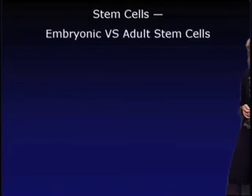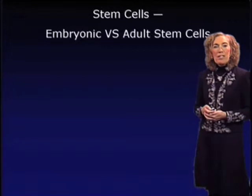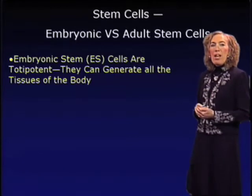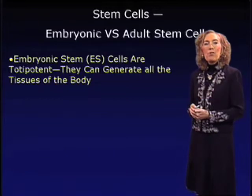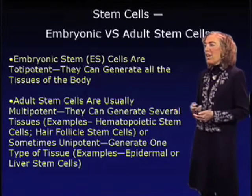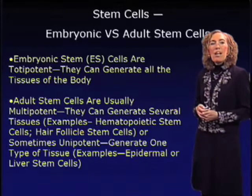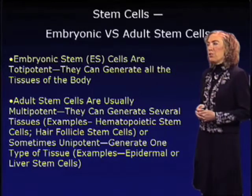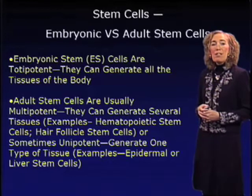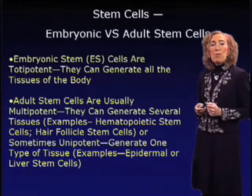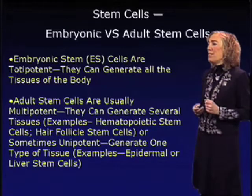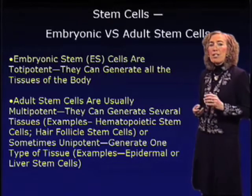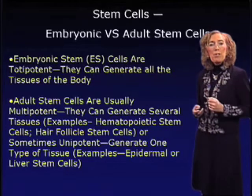What's the difference between an embryonic stem cell and an adult stem cell? Embryonic stem cells are what we call totipotent — they have the capacity to generate all of the tissues of the body. In contrast, adult stem cells are what we call multipotent. These cells can generate several tissues, examples being hematopoietic stem cells that can generate blood, cells of the immune system such as B lymphocytes and T lymphocytes, macrophages, or cells of the hair follicle stem cells, which can generate not only hair follicles but also epidermis and sebaceous glands.